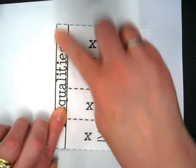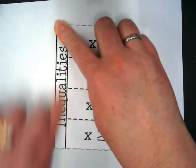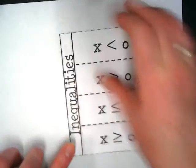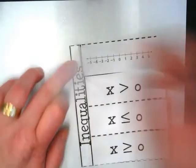I'm going to fold that back closed and press down just where it says inequalities and that's going to give us a little seal here where the glue is on the inside and this doesn't flip all the way back.